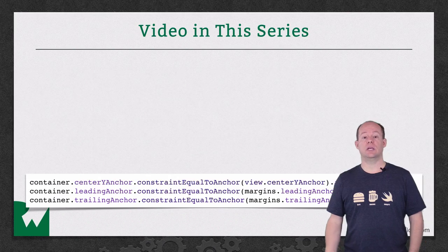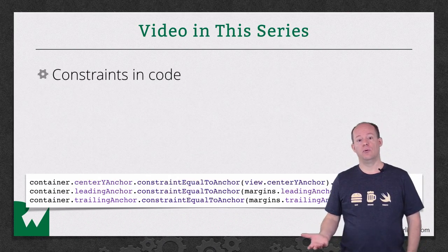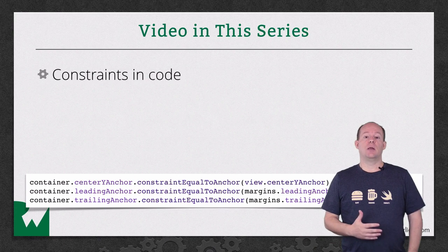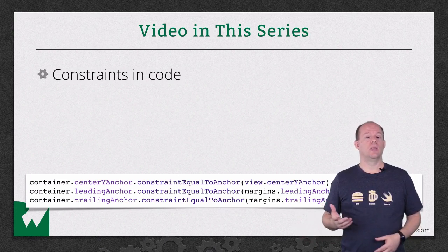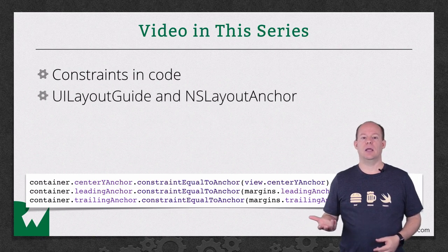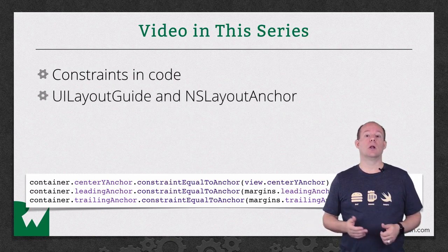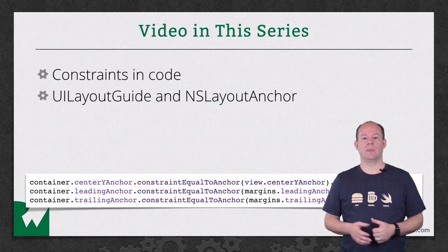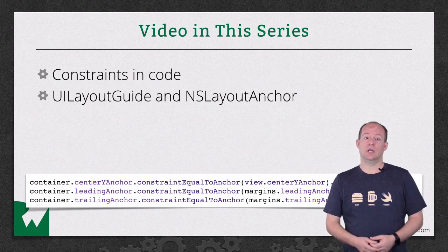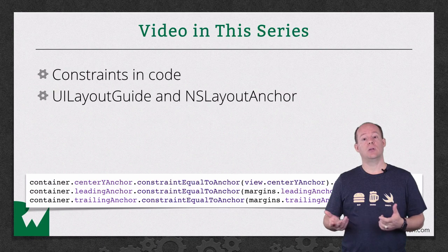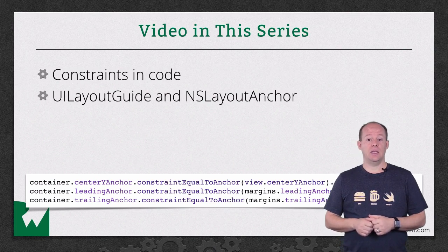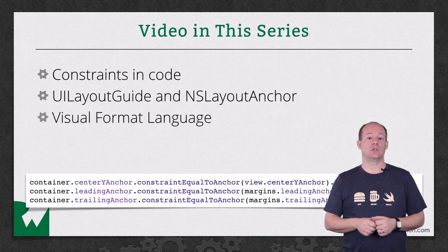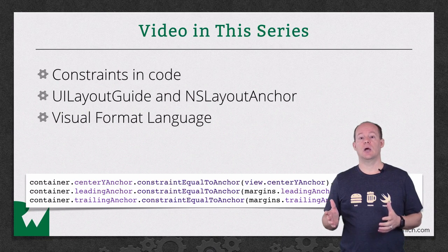Starting with video 6, you'll learn about creating constraints in code. iOS 9 provides several new ways to make handling constraints in code more concise and readable, using UI Layout Guide and NS Layout Anchor. You'll learn about those in video 7. There's also a new UI Stack View control in iOS 9 that makes working with Auto Layout even easier — for more on that, see our UI Stack View video tutorial series. Video 8 covers the visual format language, a way to create multiple constraints in code at once.